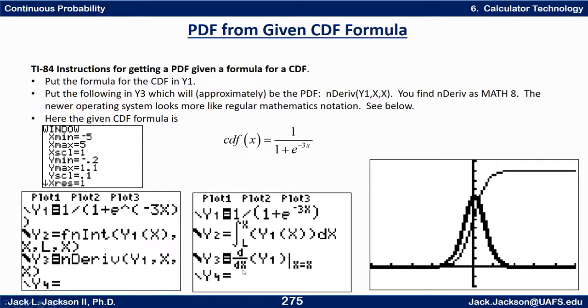On the newer operating system you put in Y3 as, when you push math 8 it looks like this. You put in the X here. Both of these will put in the X down here and then the X over here and you put in the Y1 in here. And again Y1 is the CDF then Y3 will be the PDF.